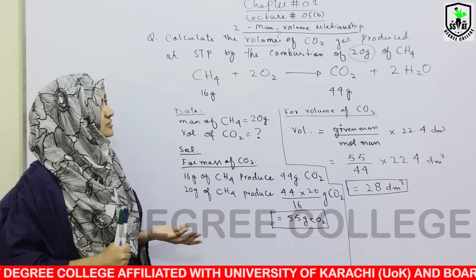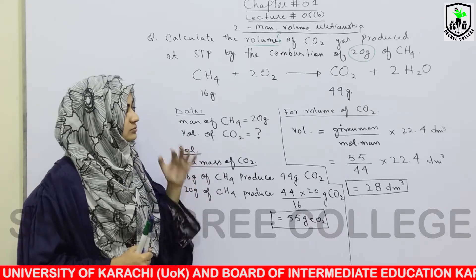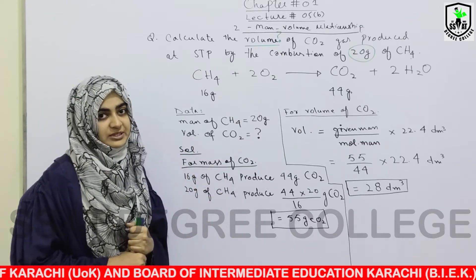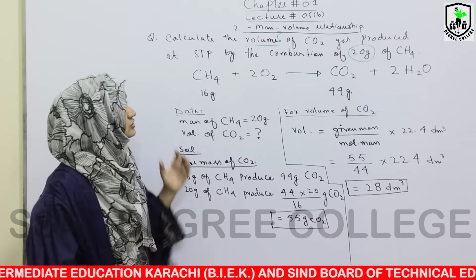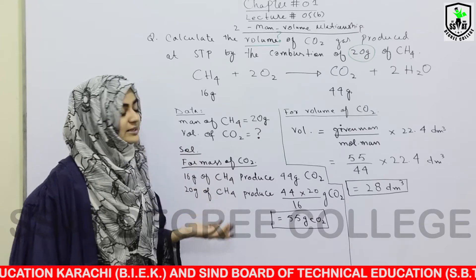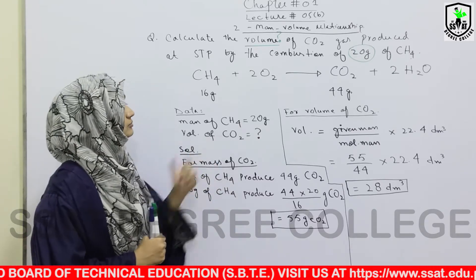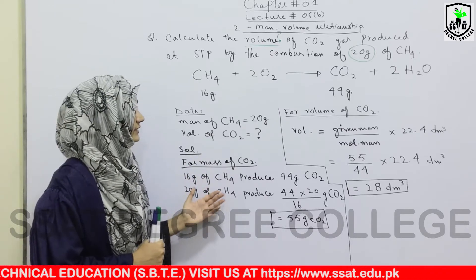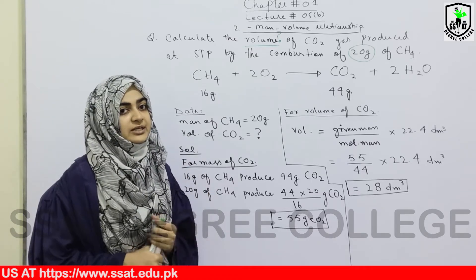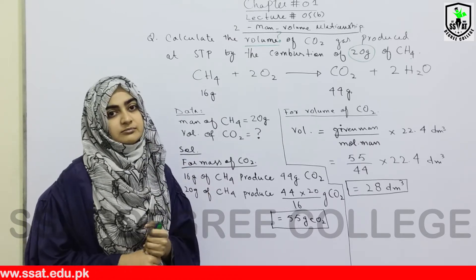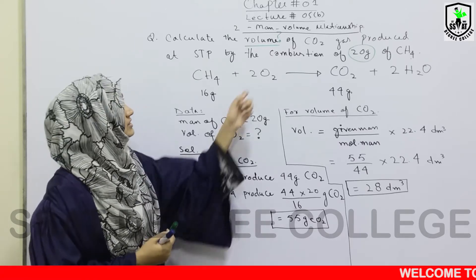Simple — mass-volume relationship में क्या करते हैं? Mass से पहले mass calculate कर लेते हैं, then उस mass को volume के अंदर convert कर लेते हैं। तो यहाँ एक के बजाए दो steps में आपका numerical complete होगा। Stoichiometry में सबसे ज़्यादा जो numerical आपसे पूछा जाता है वो mass-volume relationship से ही पूछा जाता है, तो यह most important numerical है इस chapter का। जब तक आपको mass से mass calculate करना नहीं आएगा, mass-volume आपके लिए मुश्किल होगा, तो पहले mass-mass relationship को अच्छे से practice करिए।